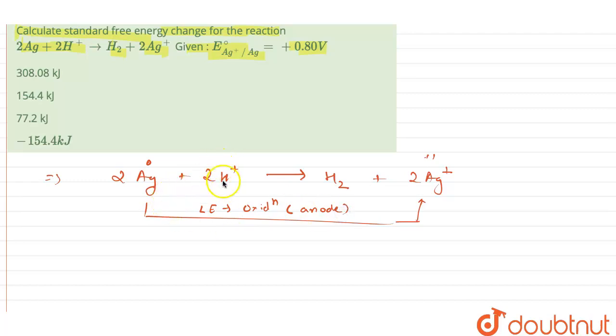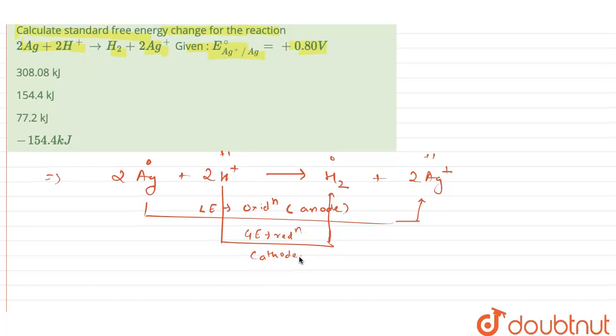Correct. Over here, in this case, the hydrogen is in +1 oxidation state going to elemental state that is 0. So here, what is happening? It is the gain of electron. So this means that reduction is happening. And reduction happens at cathode.